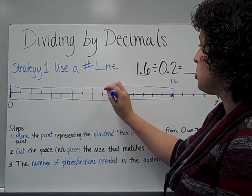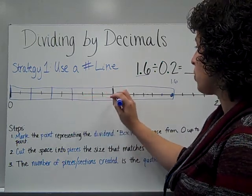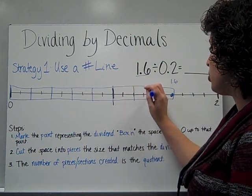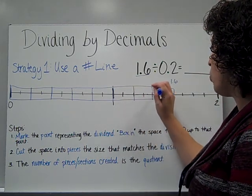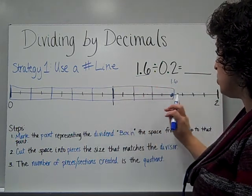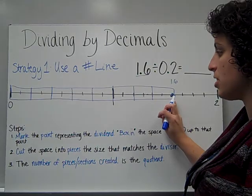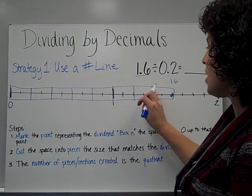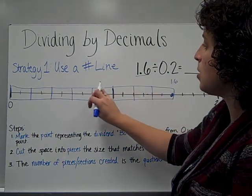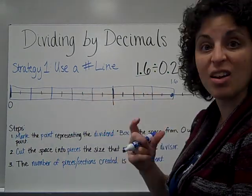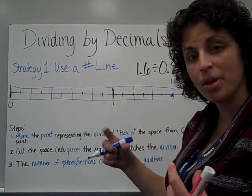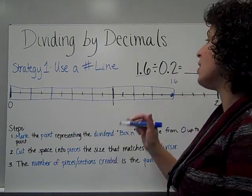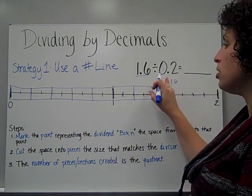1, 2, 1, 2, 1, 2, 1, 2, 1, 2. So now each of these pieces that I've cut that big box into is 2 tenths large.